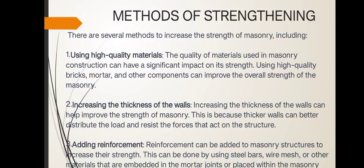Methods of strengthening: There are several methods to increase the strength of masonry. Using high quality materials: The quality of materials used in masonry construction can have a significant impact on its strength; using high quality bricks, mortar, and other components can improve overall strength. Increasing the thickness of the wall: Increasing wall thickness can help improve the strength of masonry, because thicker walls can better distribute the load and forces that act on the structure.